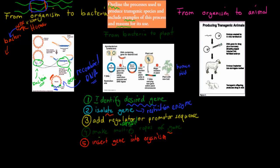The last step is obviously to insert the gene into the organism. After cutting them out, adding the regulator promoter sequence, and making copies — these four steps — we haven't actually inserted it yet. We've just found the gene we want, cut it out, added the regulator and promoter sequences, and made copies of the genes.